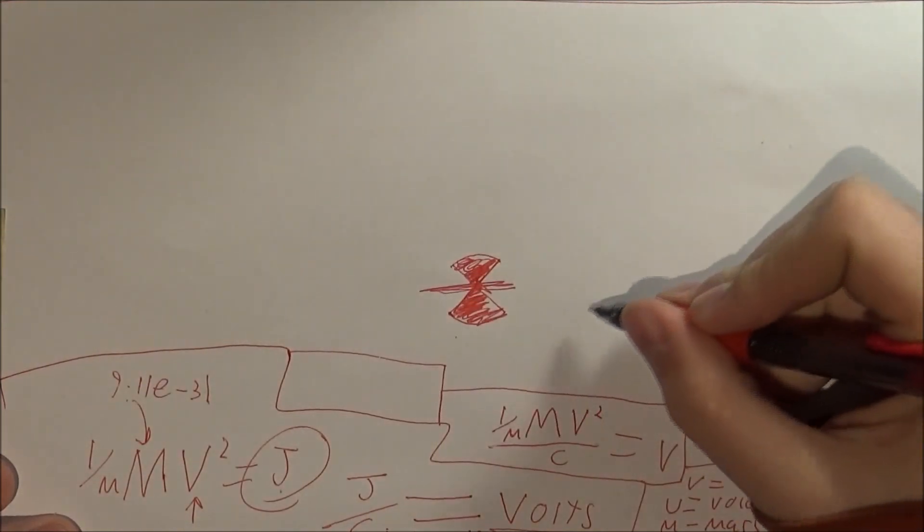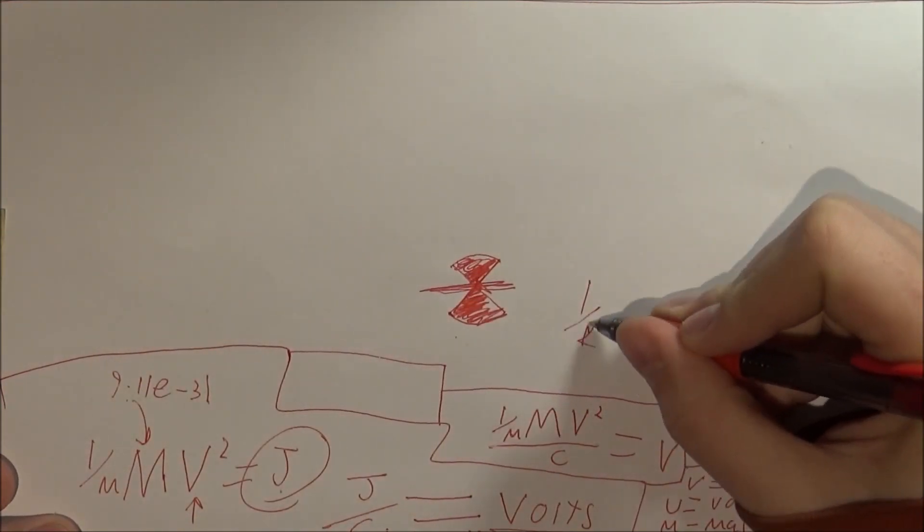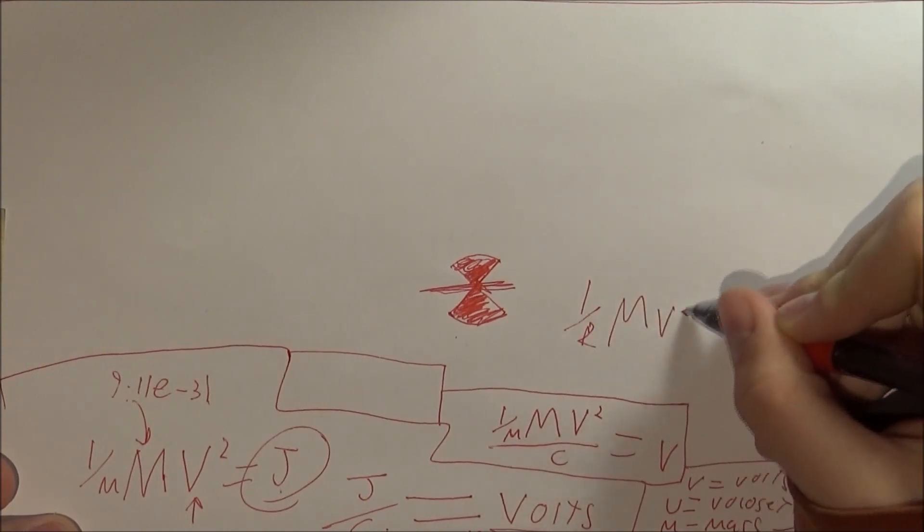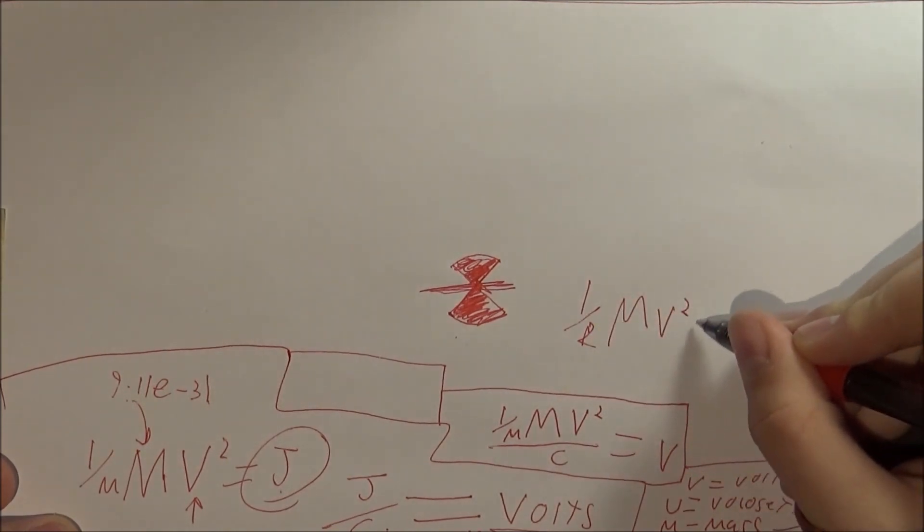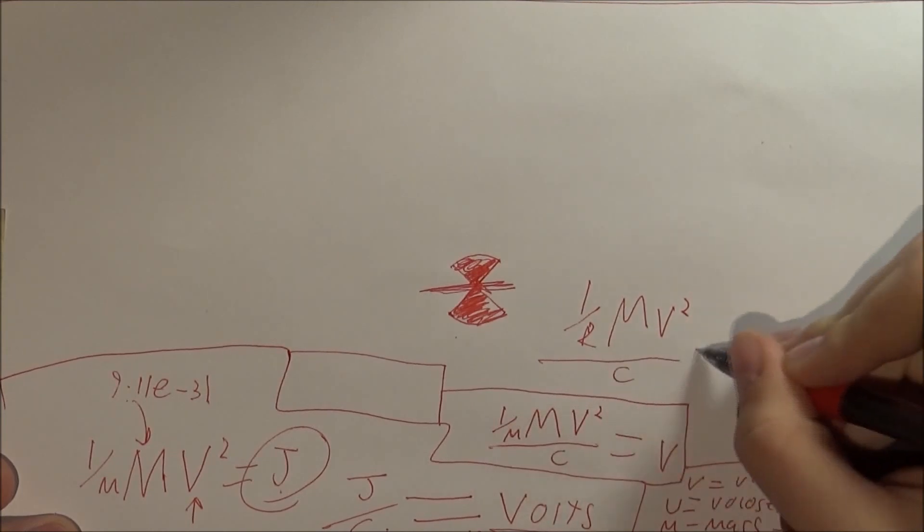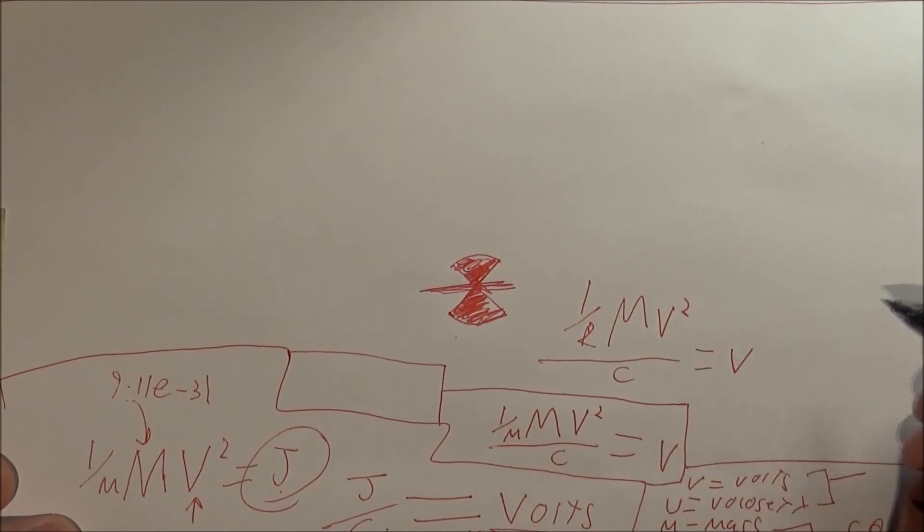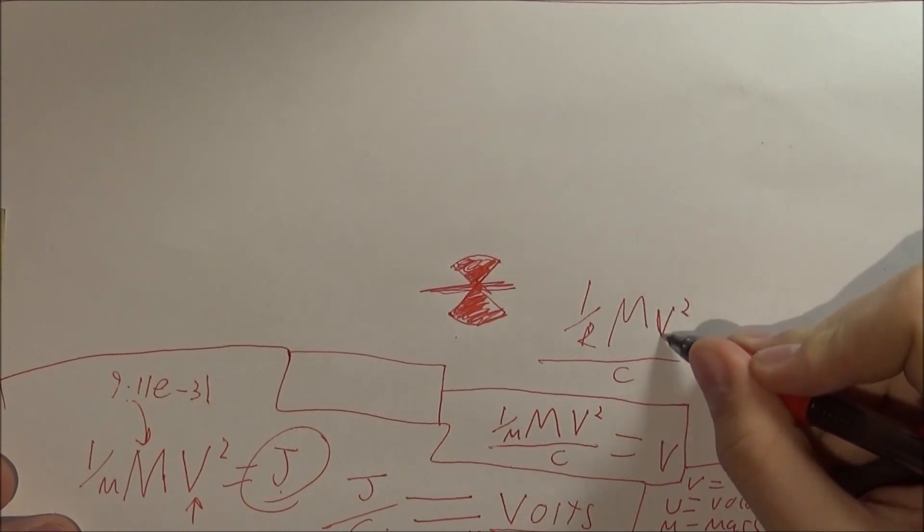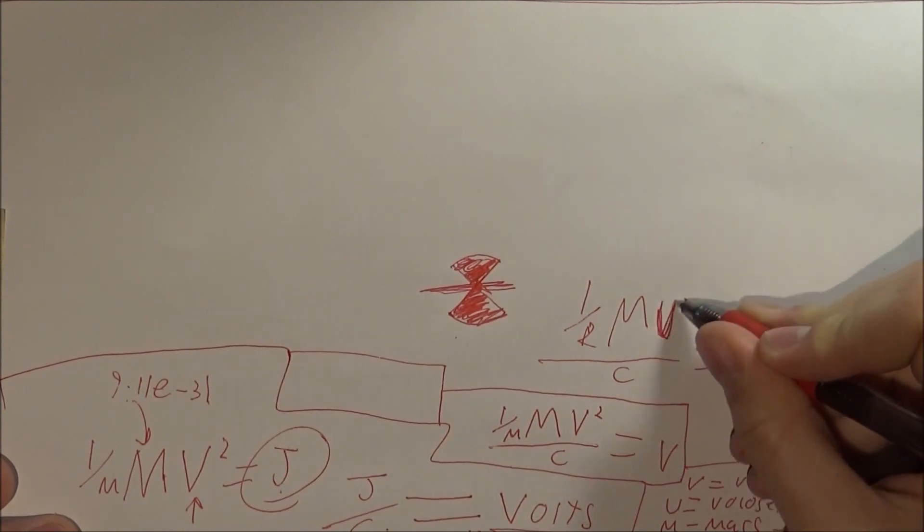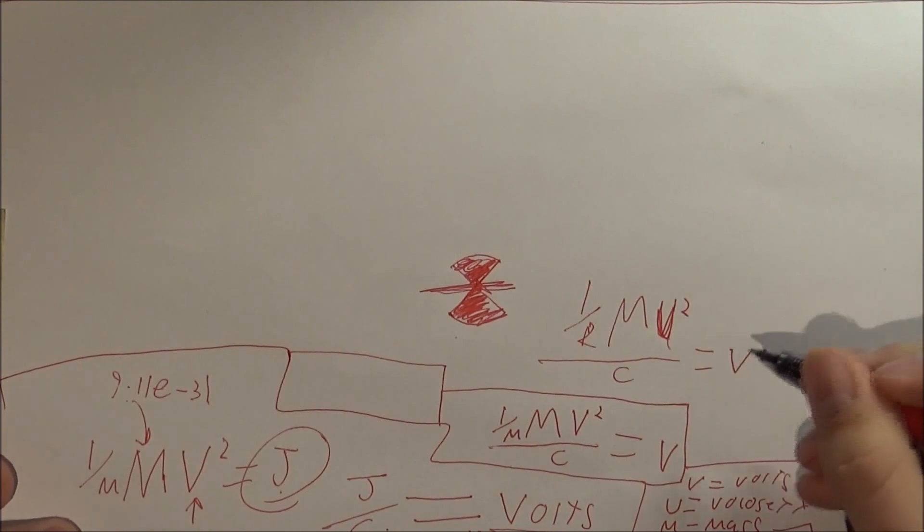One half M over two times that V squared over C equals V. So first move this over here.